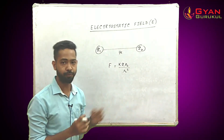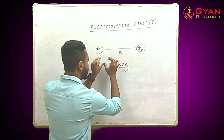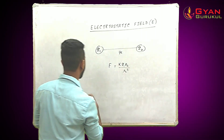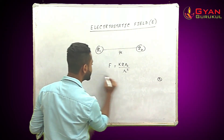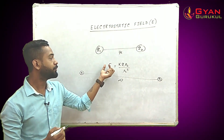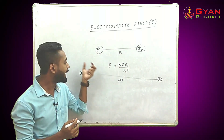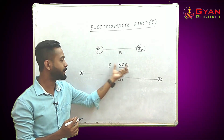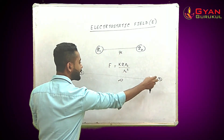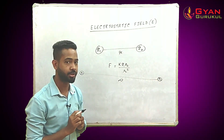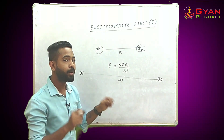What happens if we separate the two charges to an infinite distance? The force would gradually approach zero as the distance increases, because force is inversely proportional to the square of the distance. So at infinite distance, there would be no force of attraction or repulsion between the two charges — the force is limited to a finite range of distance.